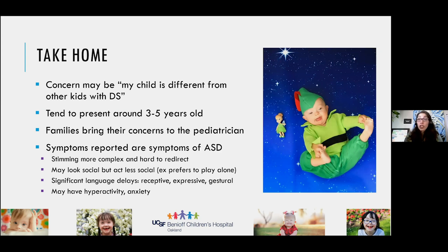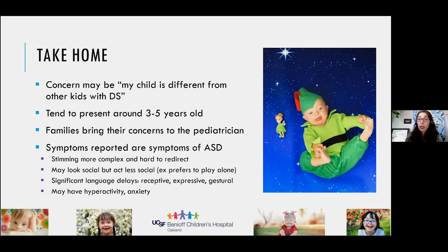Take-home points on presentation: the concern from the parent might be 'my kid is different from other kids with Down syndrome,' and that concern should be honored. They tend to present around three to five years of age, and families will often bring concerns to a pediatrician or educator. Symptoms include stimming and stereotypy that is more complex and harder to redirect, less sustained social interaction, more significant language delays — especially receptive language — and more co-occurring hyperactivity and anxiety.